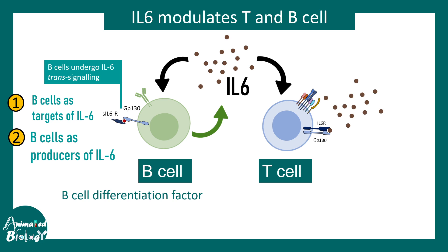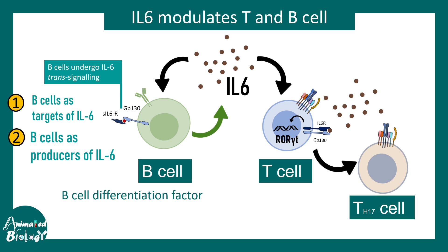T cells express the interleukin-6 receptor and the co-receptor GP130, so they can receive interleukin-6 and initiate IL-6 signaling. As a consequence of downstream signaling, ROR gamma-T, a master regulator of TH17 cell fate, is upregulated. The T cell is then polarized to a TH17 state, which is highly associated with inflammation and is a potent driver underlying the pathology of several diseases.